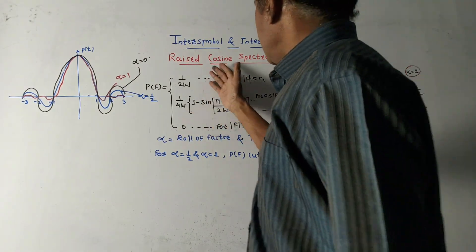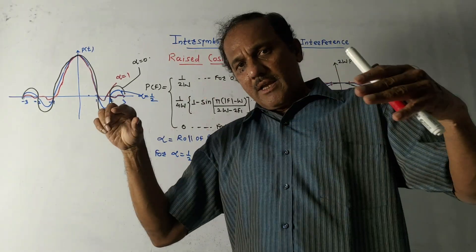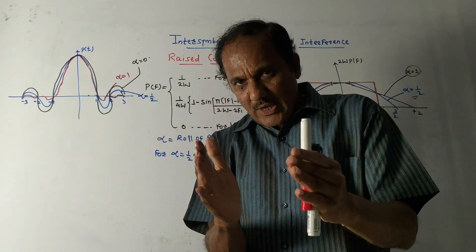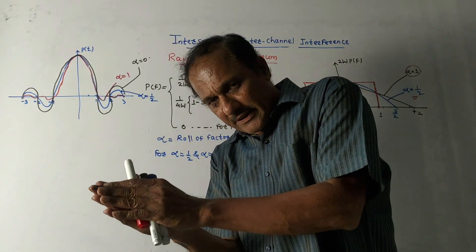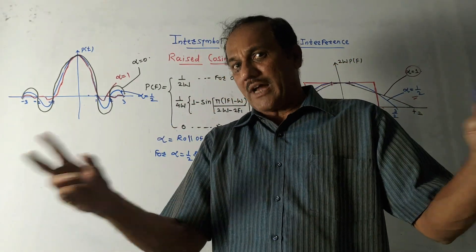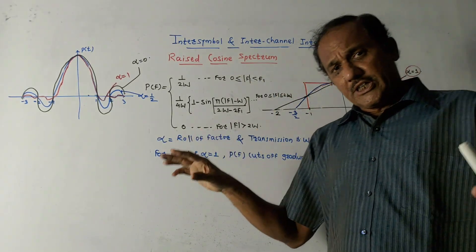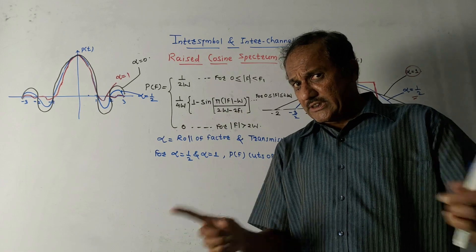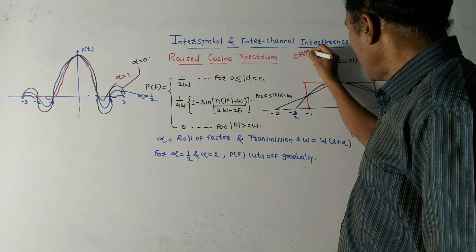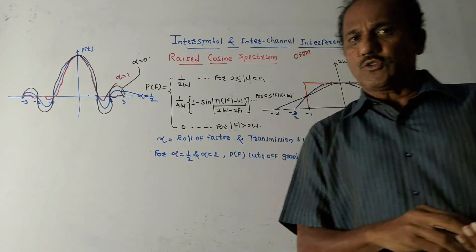Similar to Inter-Symbol Interference, there is a concept of Inter-Channel Interference. In practical systems, many channels are used for signal transmission. If overlapping of signals takes place between two adjacent channels, it is called Inter-Channel Interference. That is it for today's session. Do watch the OFDM video, for which I will provide the link in the description box. Thank you for watching.